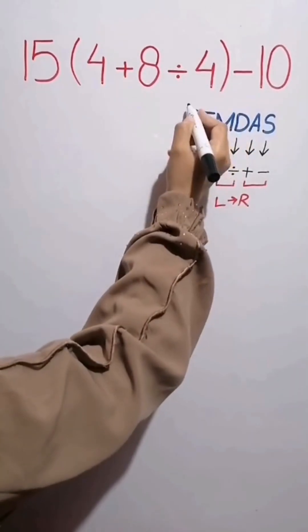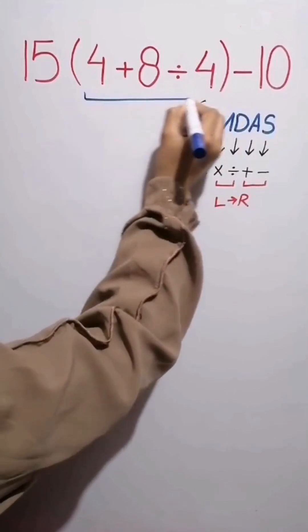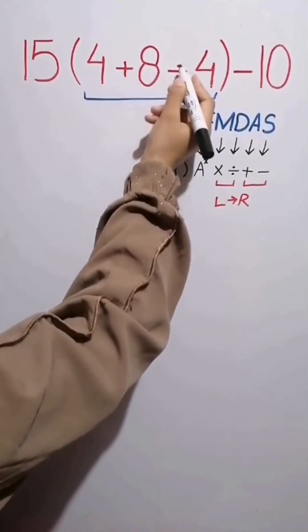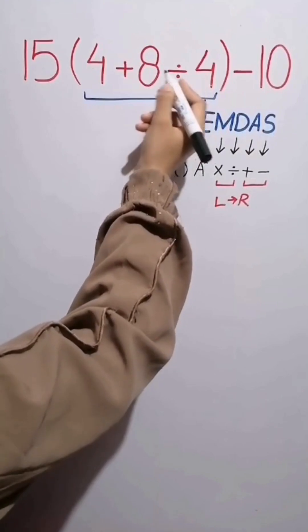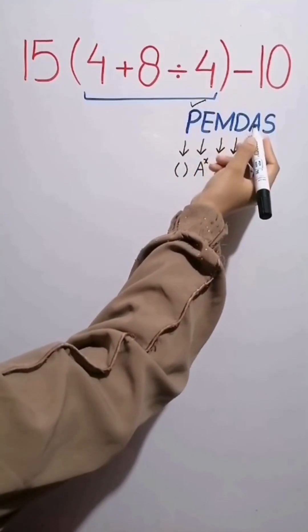In this expression, first we simplify the parentheses. Inside the parentheses, we have addition and division. First we do the division between 8 and 4 because division comes before addition.